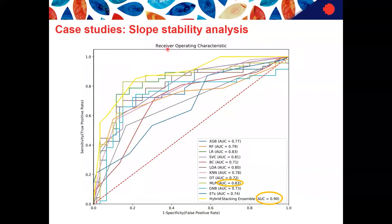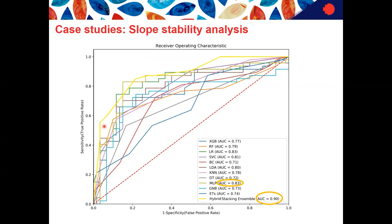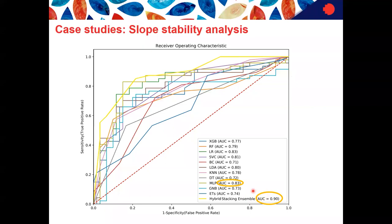This is the ROC curve for the slope stability problem. The AUC is related to the area under the curve — if the area is one, that's 100% correct prediction, and the closer to one, the better the performance. We can see AUC is 0.90 for the hybrid ensemble, and the next one is MLP with an AUC value of 0.83.